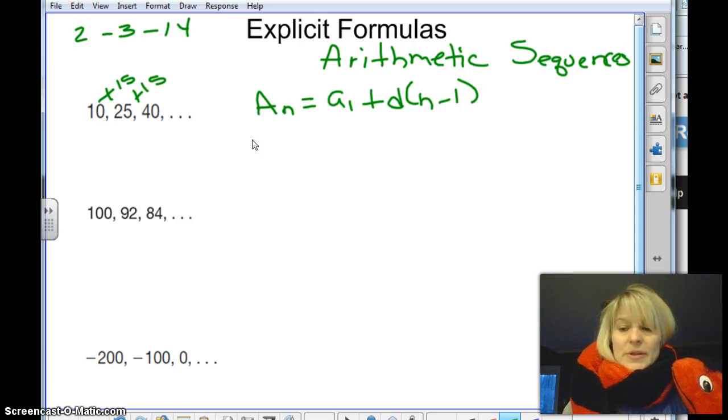So explicit formulas are when we don't know what term we're trying to find. Like so far we've been like, find the 30th term or the 50th term in this sequence. Here we just want to come up with a formula. So we aren't going to have a value to plug in for n. So we're going to solve as much of this as we can without having n. So for the explicit formula for this equation, I would write a sub n.